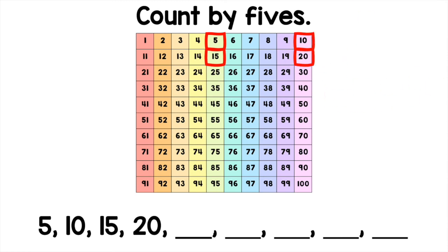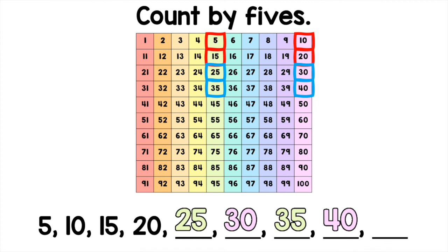To find the next 5 numbers, we continue counting on by 5s: 25, 30, 35, 40, 45. Let's check our work by recounting the numbers at the bottom of the screen.